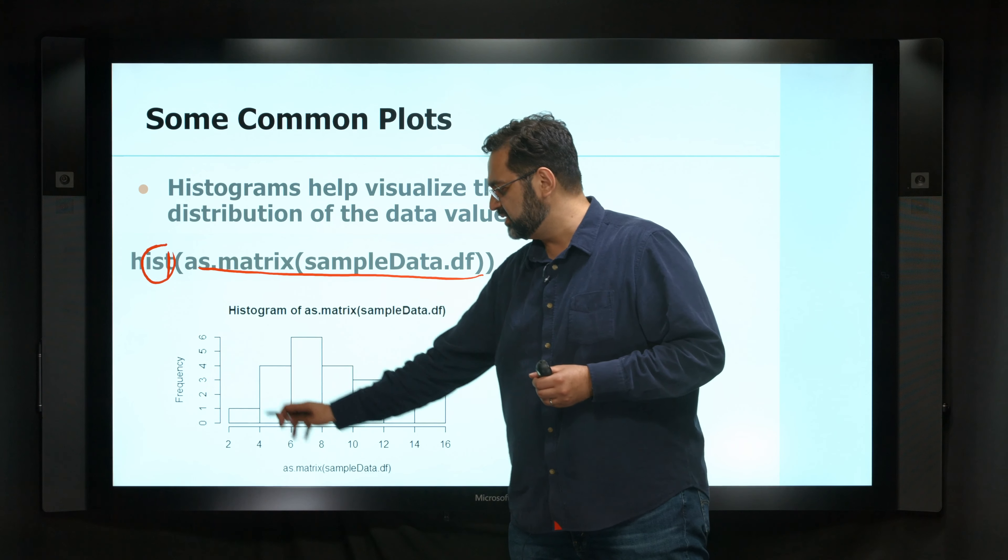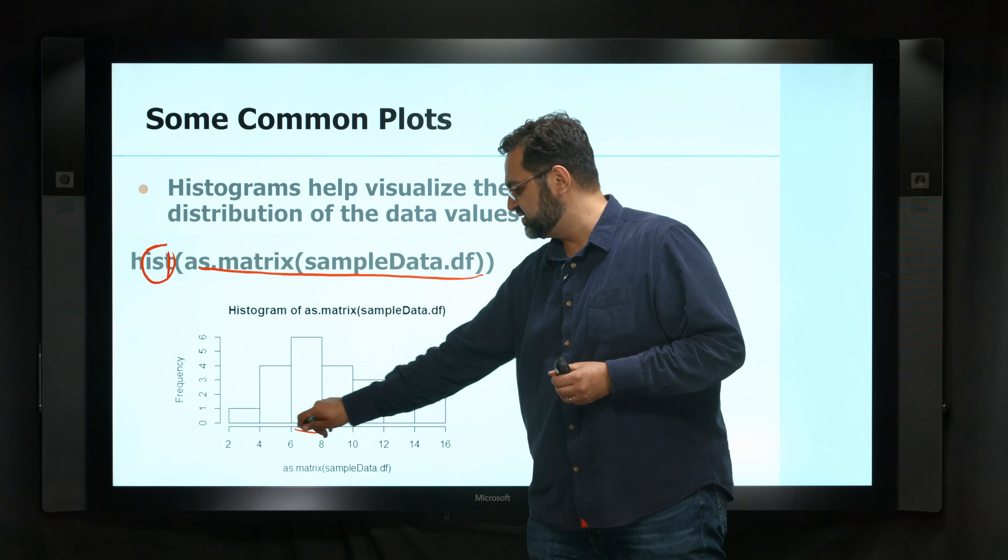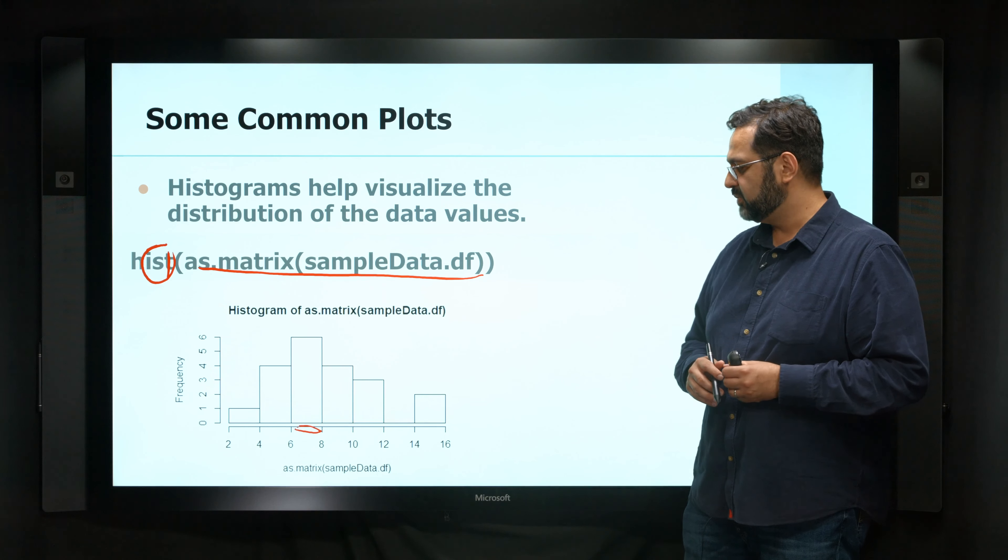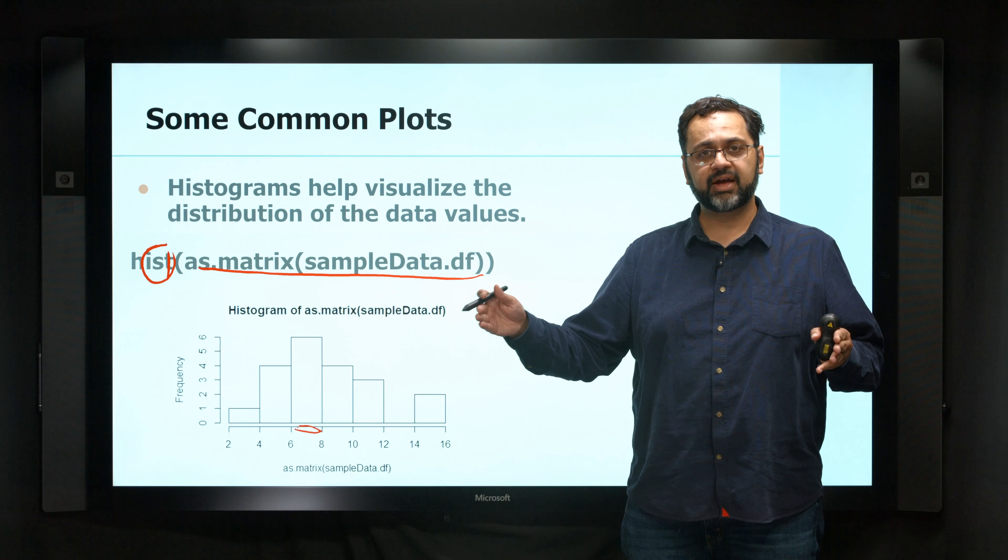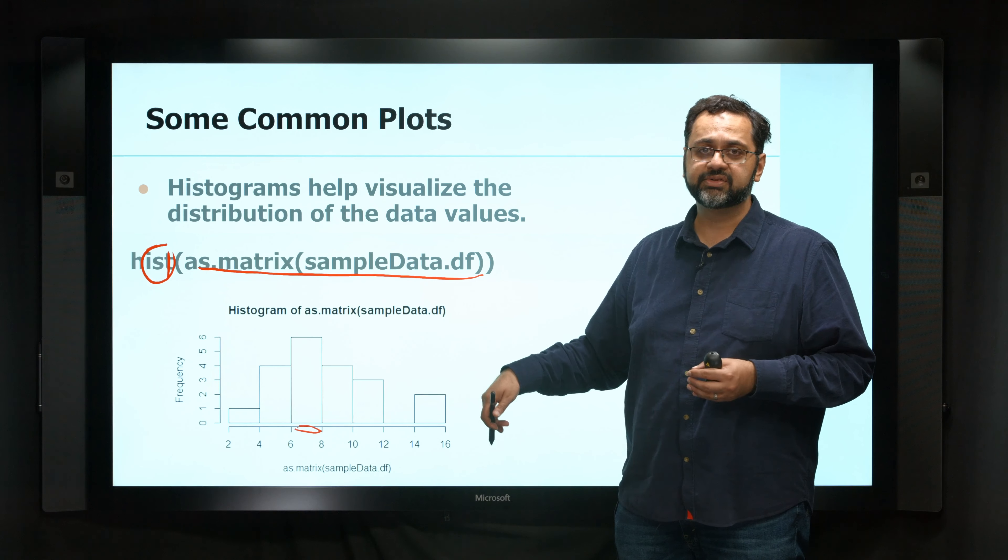This is the frequency of how many times there are values between 7 and 8, which seems to be the one that's most popular.